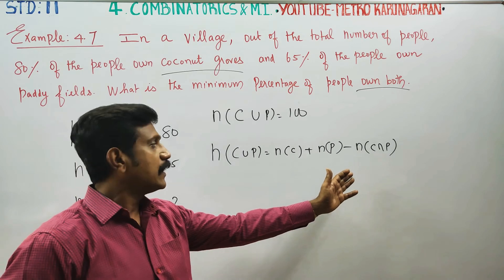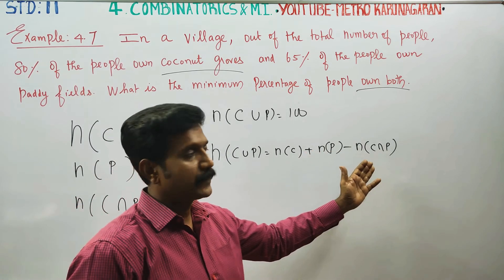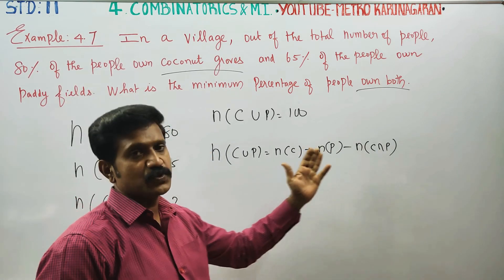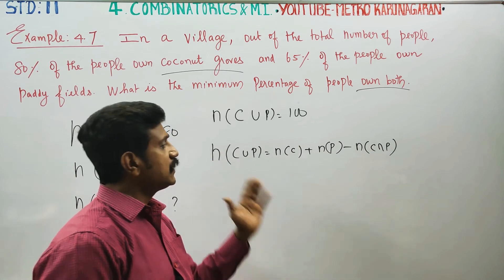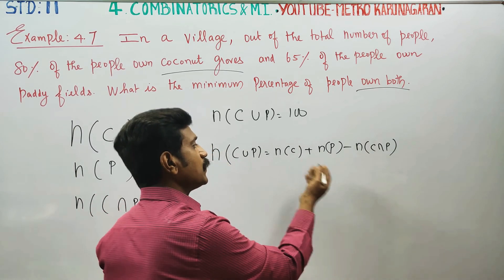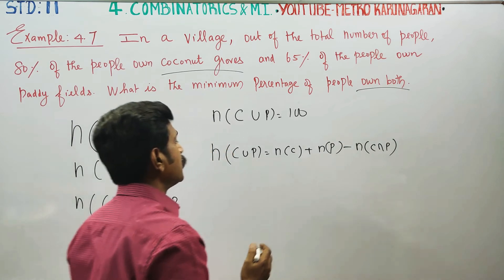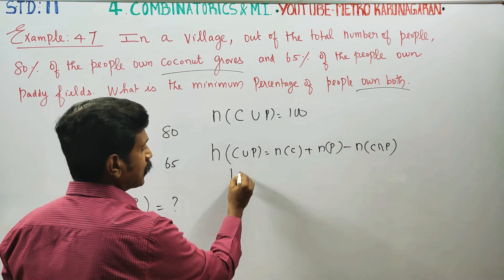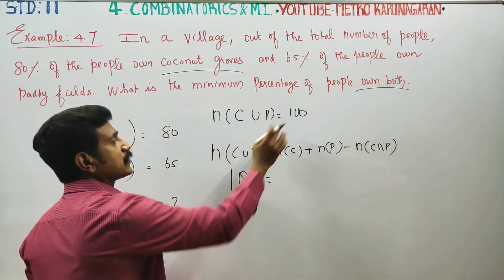This is the inclusion and exclusion principle for counting. Coconut union paddy total is equal to n(c union p).